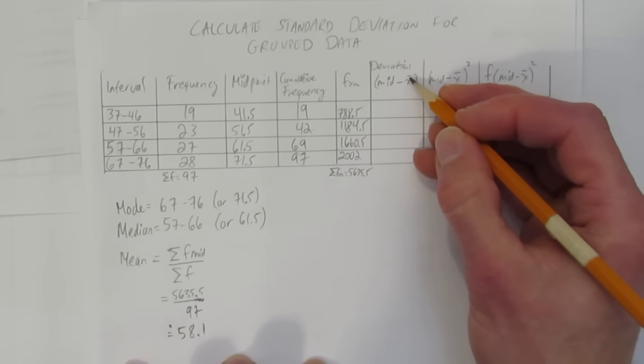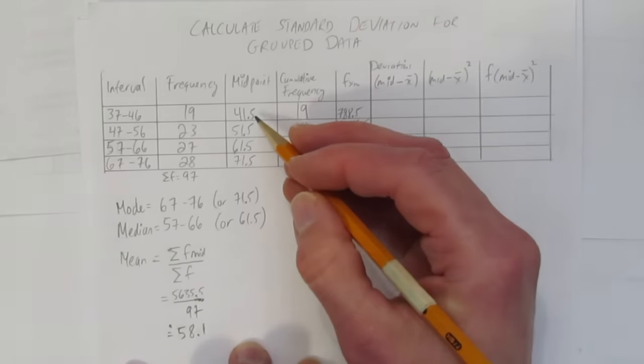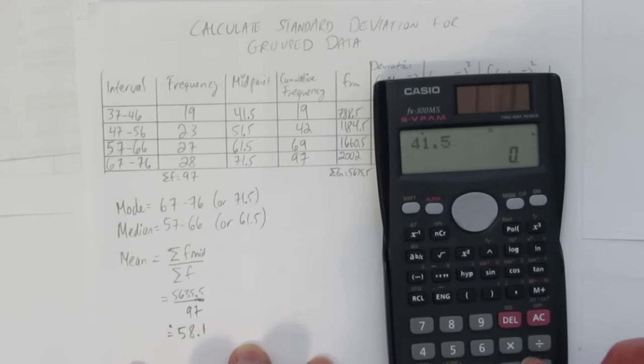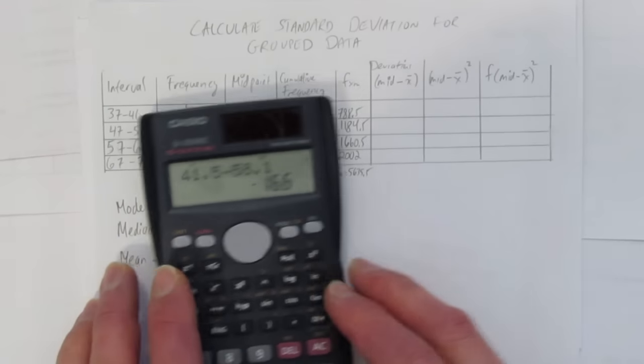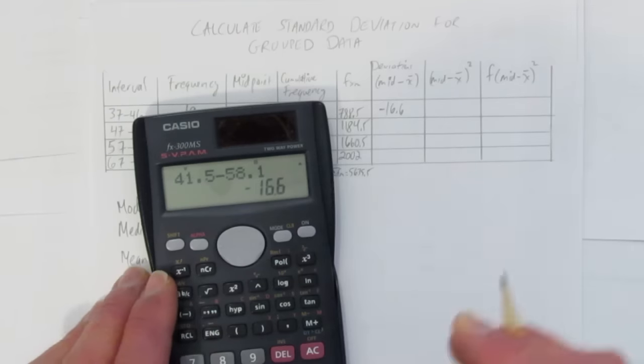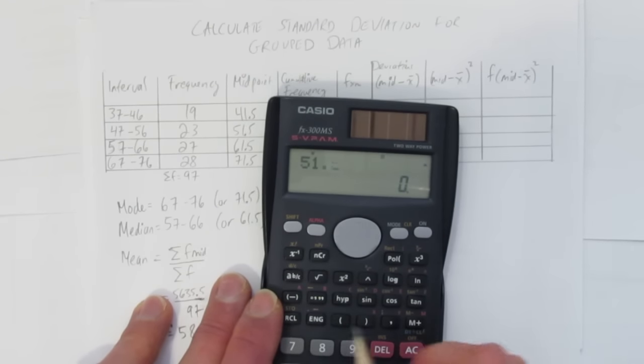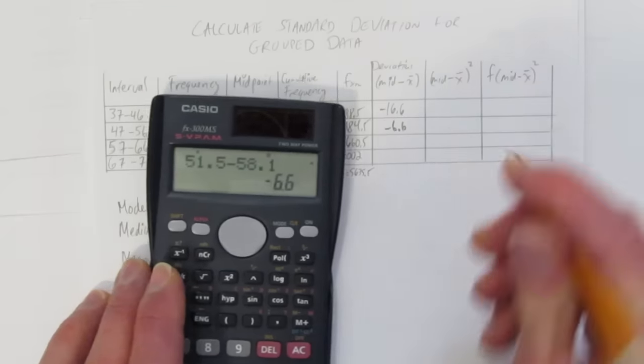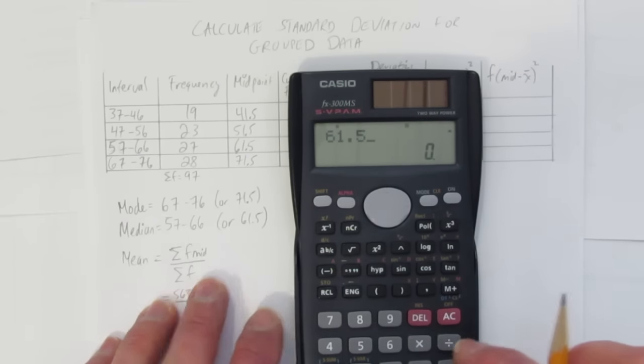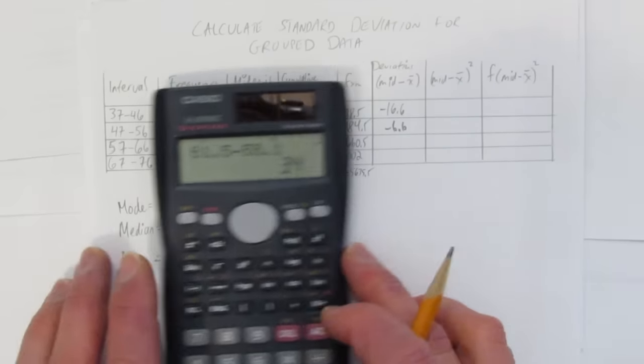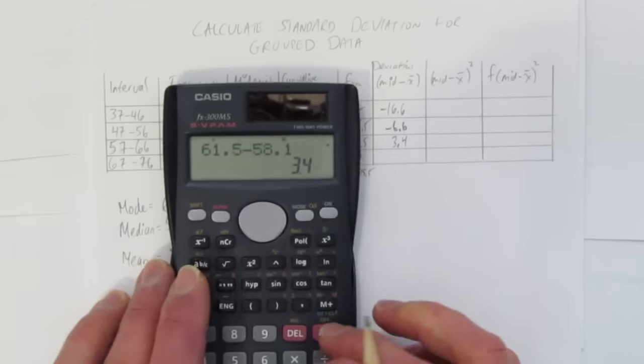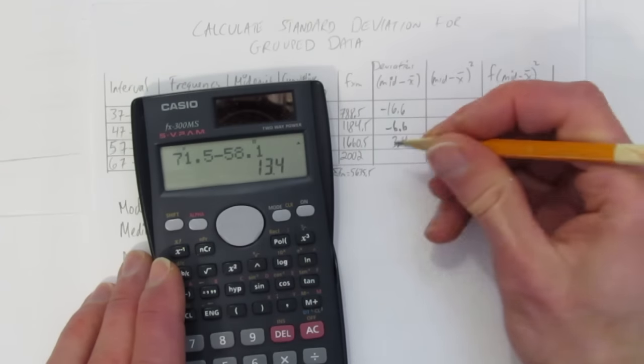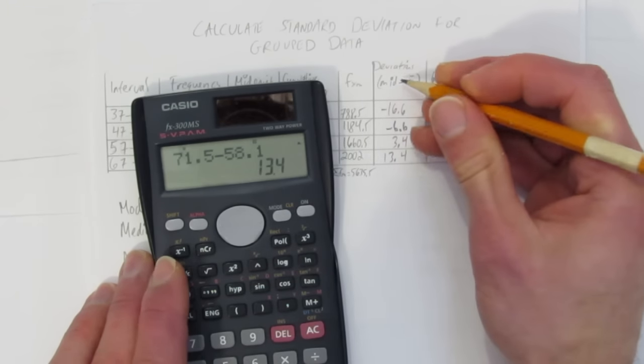Got our mean. Our mean's necessary because that's what this x bar is. We're going to take the midpoint minus the mean. So this midpoint minus this mean. That's always the same mean. 41.5 minus 58.1, and we get negative 16.6. Got it. Next, 51.5 minus 58.1, and you get negative 6.6. You might see a pattern here, but let's keep going. 61.5, as in these calculations might not be necessary if you can see the pattern. Last one. 71.5 minus 58.1, and you get 13.4. Those are the deviations, or the midpoint minus the mean.